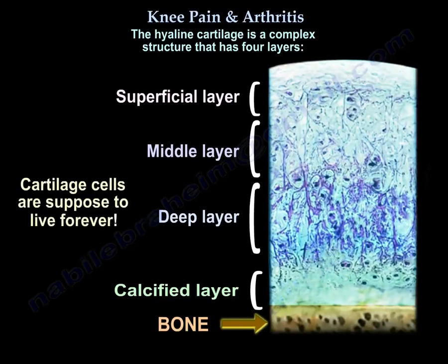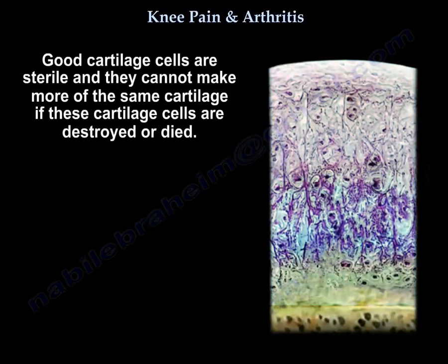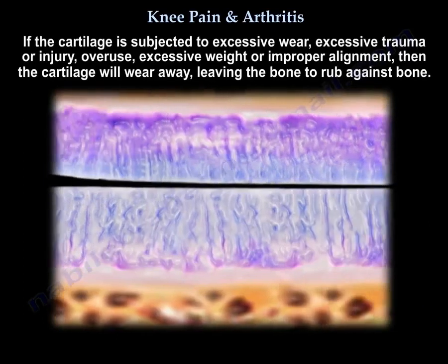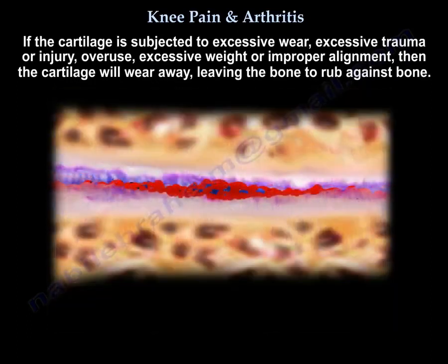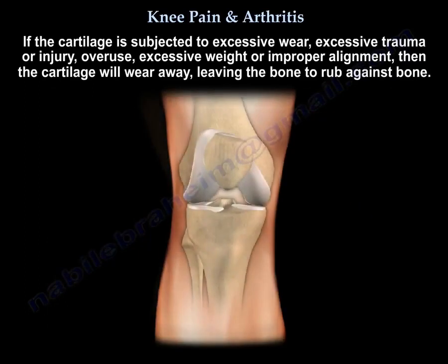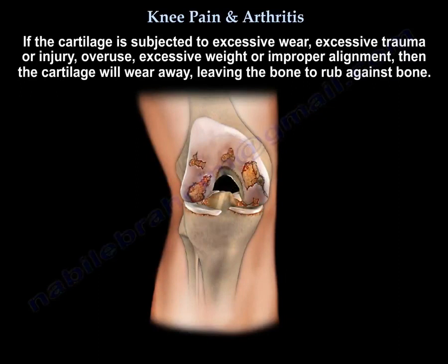Cartilage cells are supposed to live forever. Good cartilage cells are sterile and they cannot make more of the same cartilage if these cartilage cells are destroyed or die. If the cartilage is subjected to excessive wear, excessive trauma or injury, overuse, excessive weight, or improper alignment, then the cartilage will wear away, leaving the bone to rub against the bone.